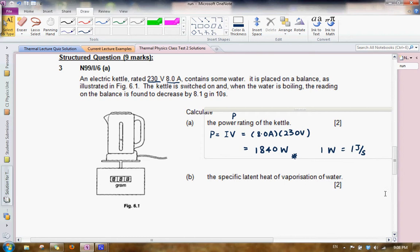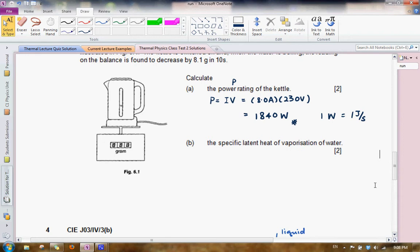In the second part, you are asked to determine the specific latent heat of vaporization of water. To do so, we need to employ conservation of energy. In this case, the kettle supplies an energy of P over a time of T. During that time of T, some mass has evaporated and the energy required to vaporize that mass, M, is given by M times the latent heat of vaporization.